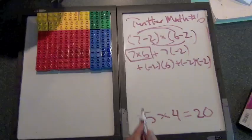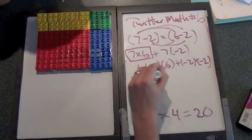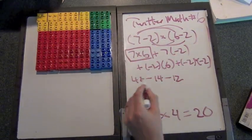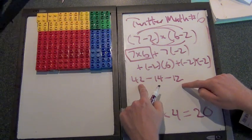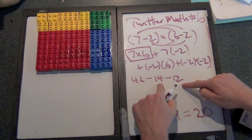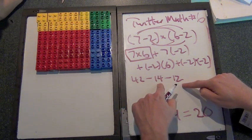Let's look for a second and see what happens. We get forty-two minus fourteen minus twelve. So what's forty-two? Let's do forty-two minus twelve first. That's thirty. And what's thirty minus fourteen? That's sixteen.